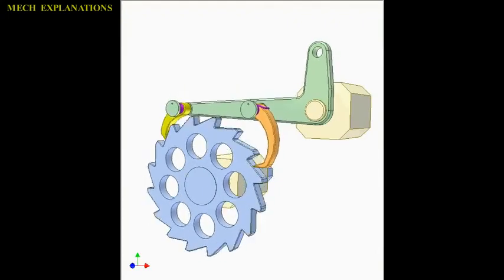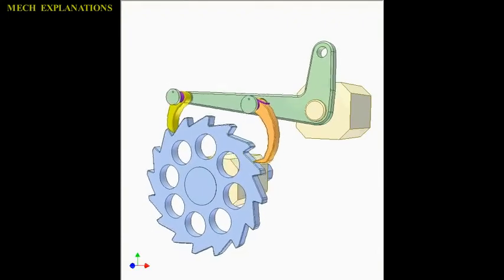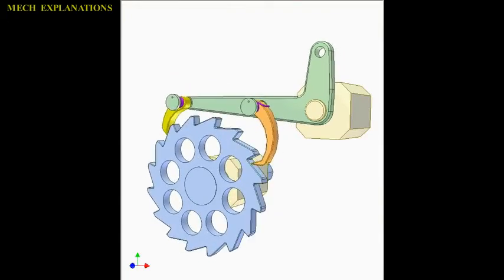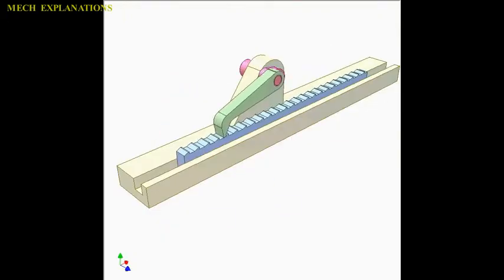Since the backward travel distance is primarily a function of the compressibility of the high friction surface, this mechanism can result in significantly reduced backlash.